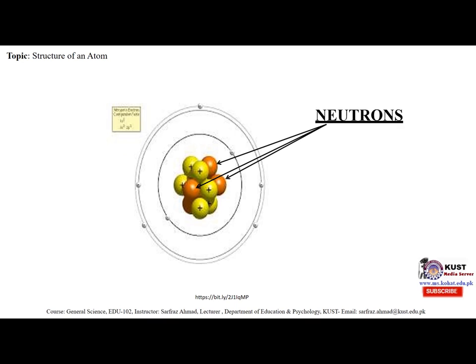The essential nature of the atomic nucleus was established with the discovery of the neutron by James Chadwick in 1932 and the determination that it was a new elementary particle distinct from the proton.